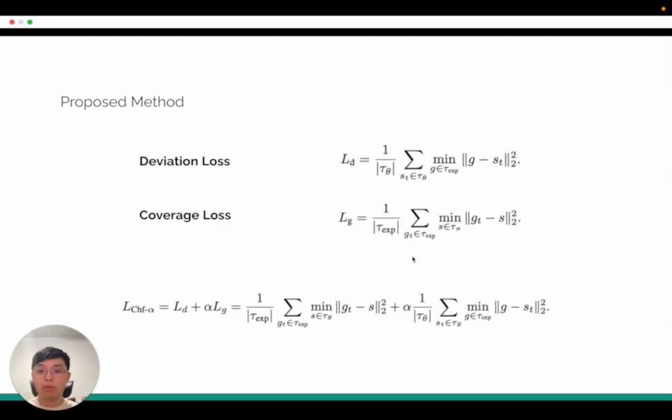We propose to use the Schenfeld distance to minimize the distance between the learner trajectory and the expert trajectory. It has two parts. The first part is the deviation loss, where we measure the distance, how much the learner trajectory deviates from the expert trajectory. The second part is the reverse. We measure how much expert trajectories coverage we have achieved.